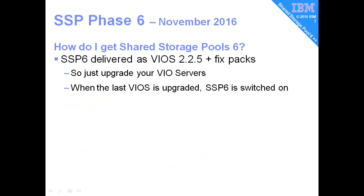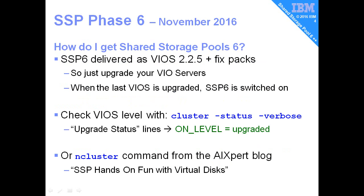So how do you get to SSP 6? You upgrade to VIO Server 2.2.5, plus its fix packs or above. When you've upgraded all of them to that level, then you'll get the new features. A little reminder: use the cluster minus status minus verbose command and look for the upgrade status lines. When they're all on level, then you know you've upgraded them, or you can use the in-cluster command on my AXpert blog.